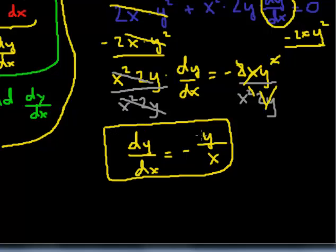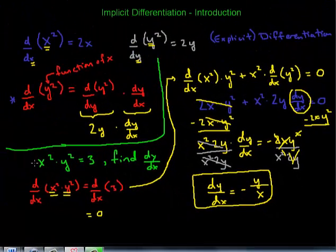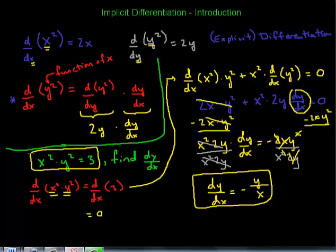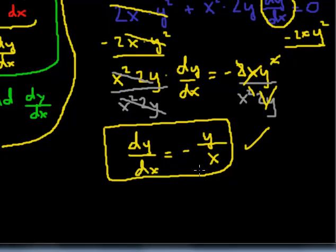So we can leave it like this. This is the result of implicitly differentiating the original expression x squared times y squared equals 3, and it's perfectly fine to leave it in terms of y and x. You could also go back and solve for y in terms of x and substitute it back in so you have just x's in the final equation. But we're okay with this one for now. I hope this helps, and I'll see you in the next video.